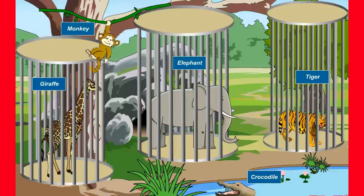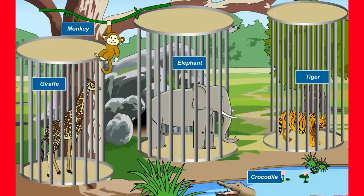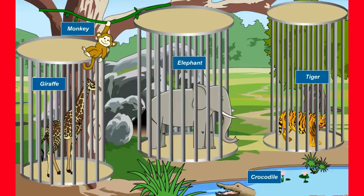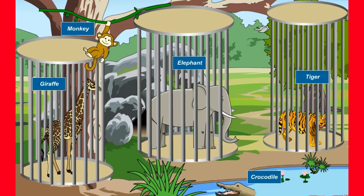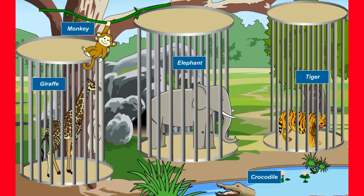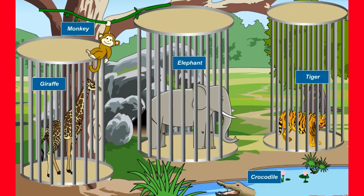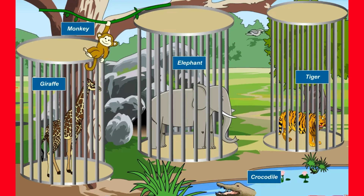There are so many different animals in the zoo. They all are of different habits and habitats. Their body structure is also different from each other. Due to this reason they all are placed into different categories and classified into different phyla.